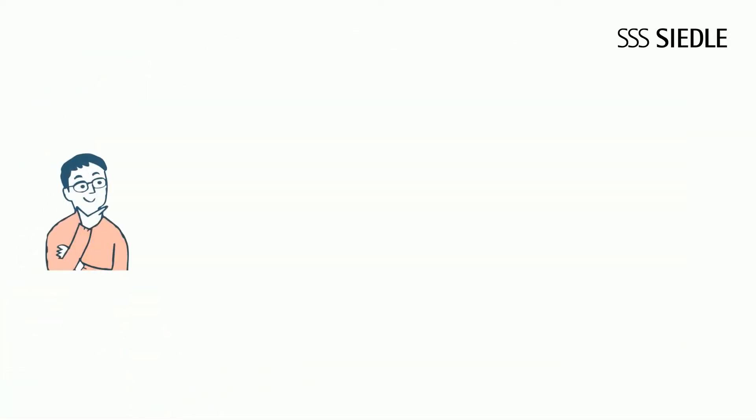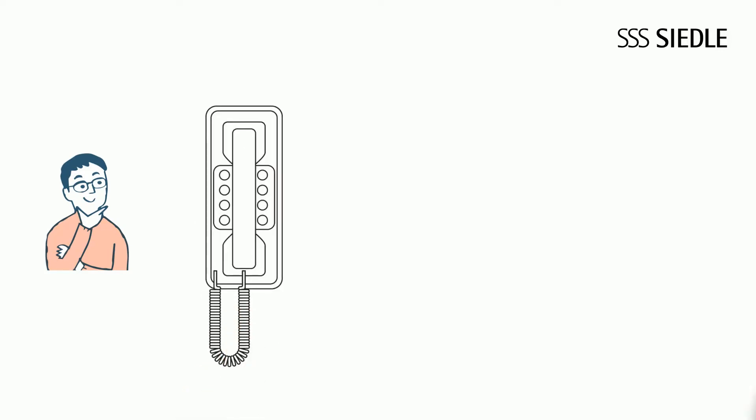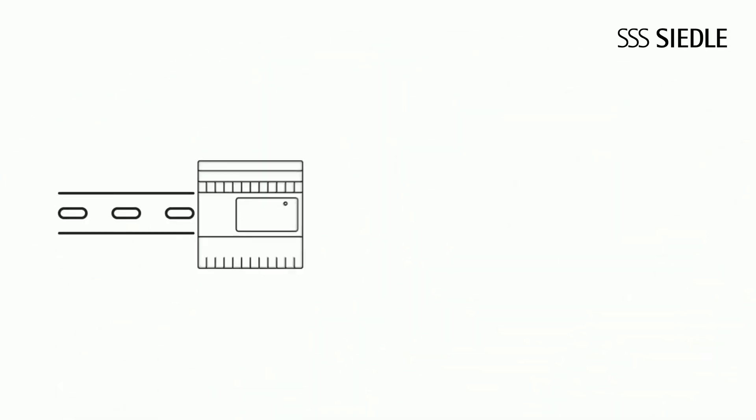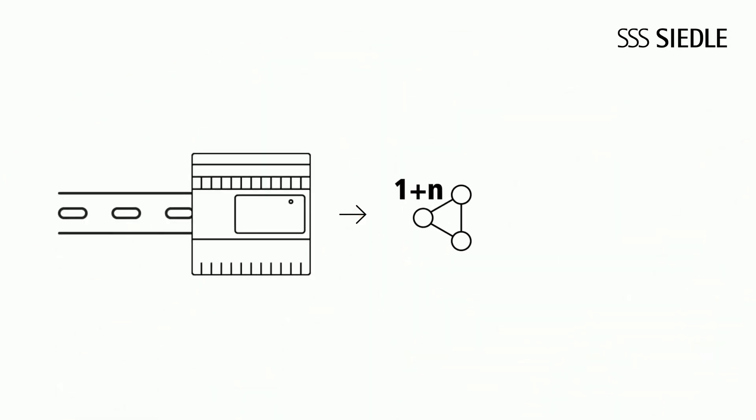John is updating the door intercom in the Huber's single-family home. He is replacing the old Siedle in-house telephone with an IQ in-house telephone. He can simply keep using the existing network device NG602. Housed in the control panel housing, it is designed for the One Plus N technology and to supply one IQ in-house telephone.